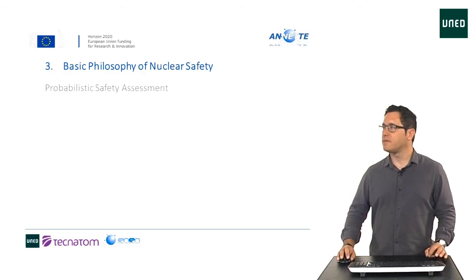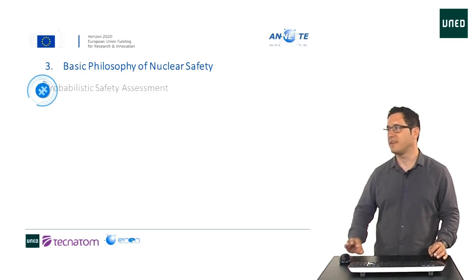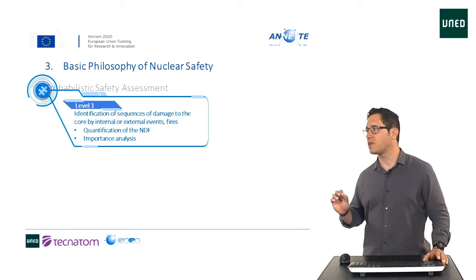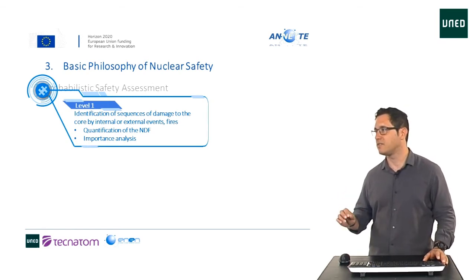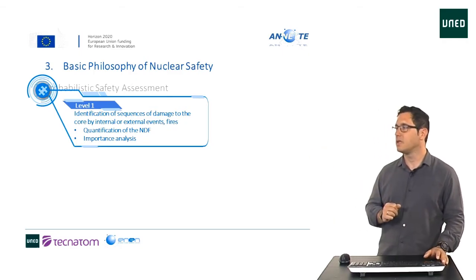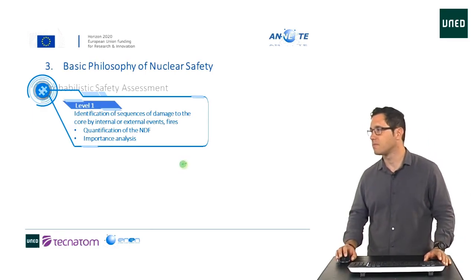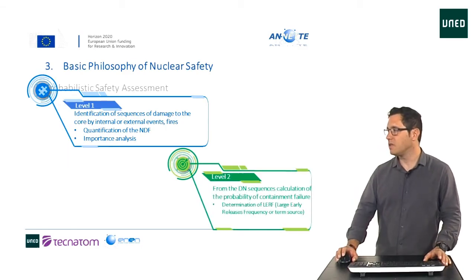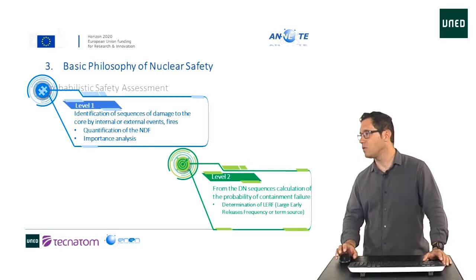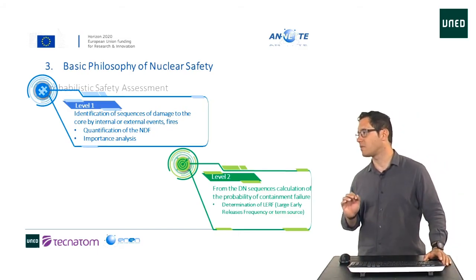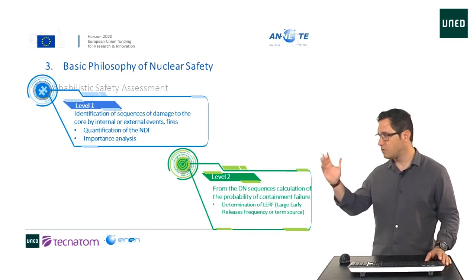So we have three different levels in the analysis or assessment. The first level is the identification of sequences of damage to the core by internal or external events and fires. It will include the quantification of the CDF and the importance analysis. The second level is the calculation of the probability of containment failure from those sequences, determining what is called large early release frequency, or source term, related to containment failure.